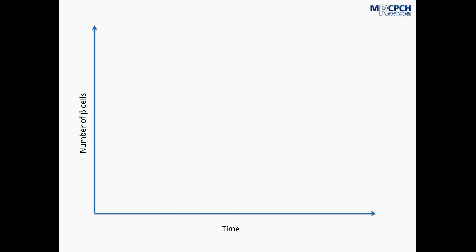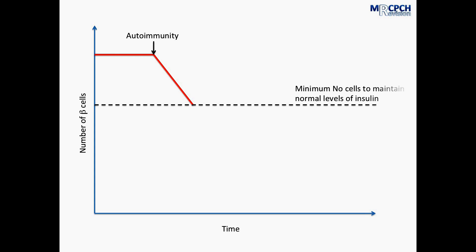So let's take a look at that in a bit more detail. Here we have a graph representing time and the number of beta cells in the pancreas. In normal individuals that number remains pretty constant. But in diabetes, when we have the autoimmunity beginning, we then begin to see a fall in the number of beta cells and this continues until we reach a level where we can no longer produce enough insulin to maintain a normal glucose level.